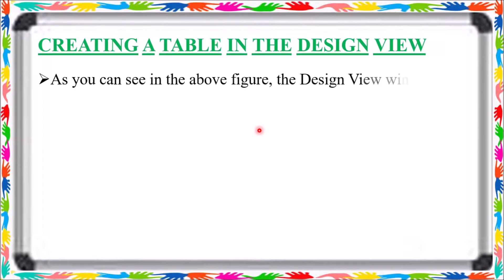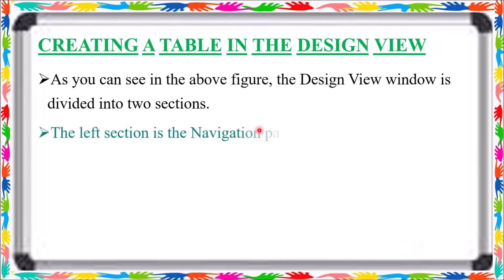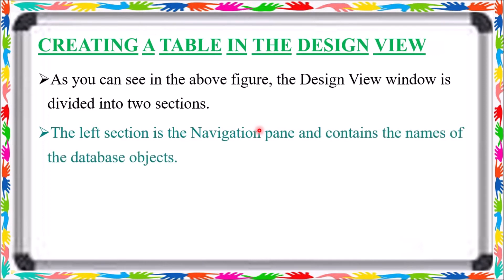As you can see in the figure, the Design View window is divided into sections. The Design View window has two sections. The left section is the Navigation Pane, which contains the names of the database objects. On the left-hand side, the Navigation Pane contains the database objects, and you can see this left-hand section of the Design View window.